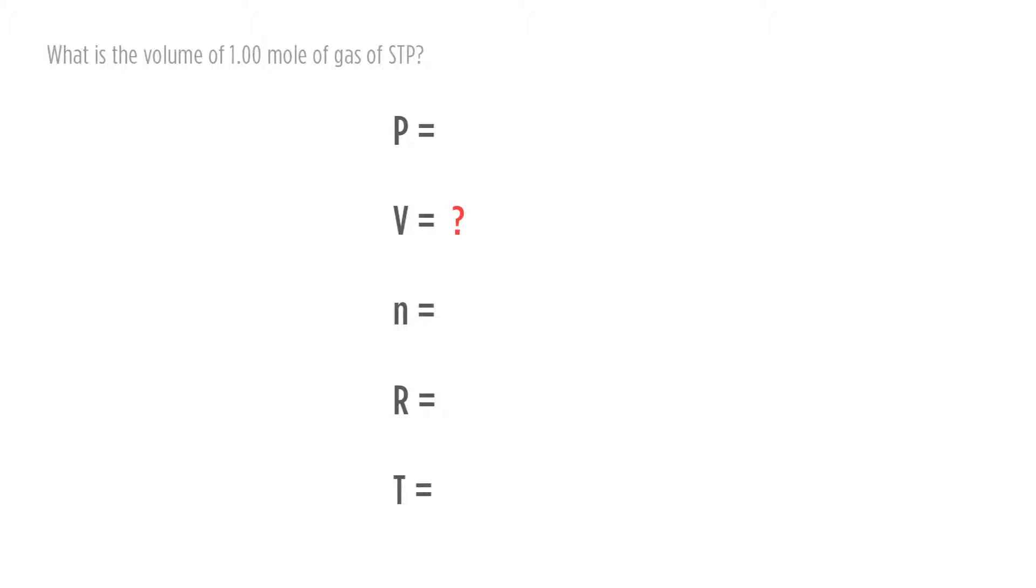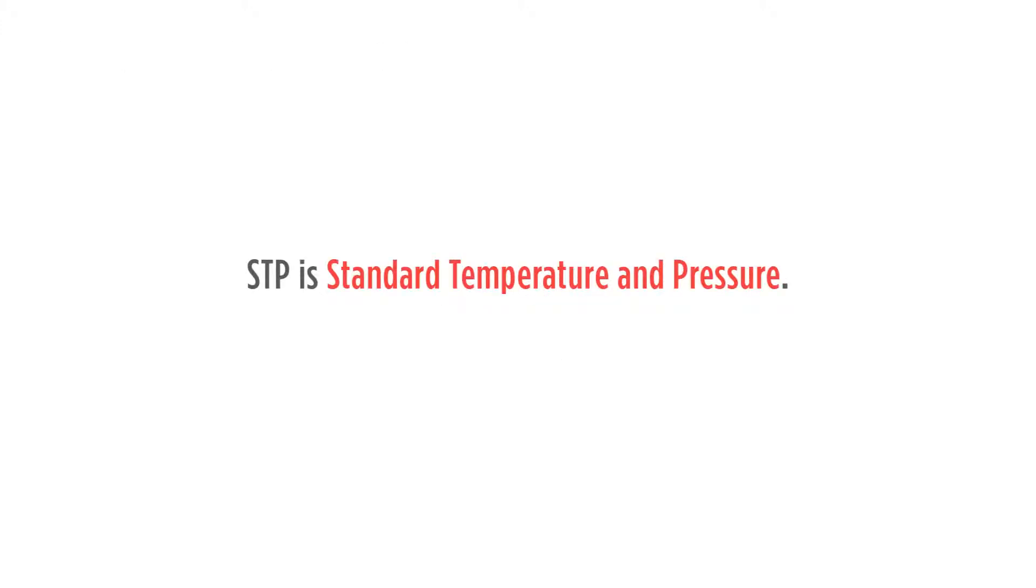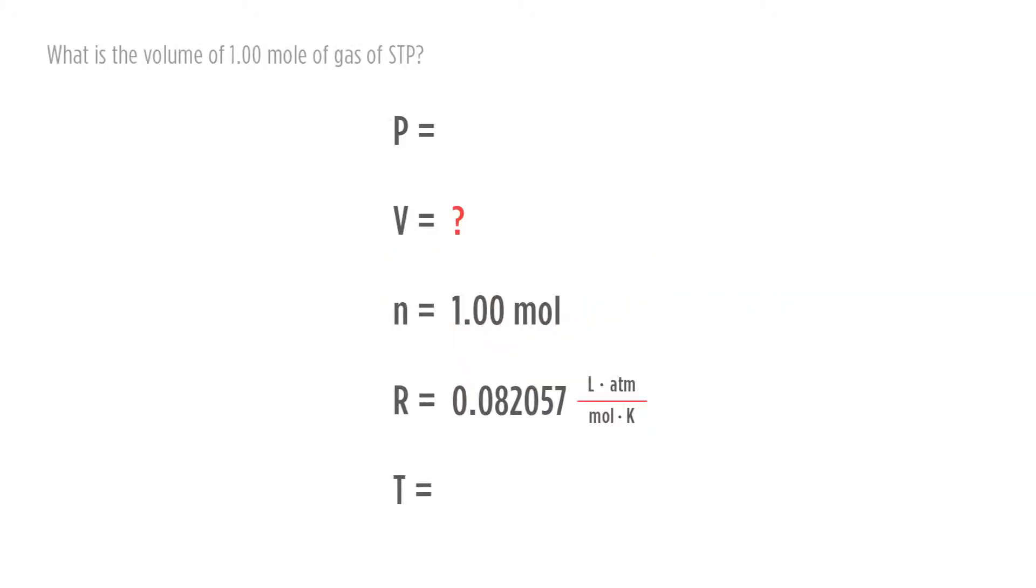We also know that we already know the number of moles, 1.00 moles for n, and of course we know R because R is our constant. It's set at STP. What is STP? STP is standard temperature and pressure. Standard temperature and pressure is 0 degrees Celsius or 273 Kelvin and 1 atmosphere. So therefore, since we know it's at STP, we can put in for pressure 1 atmosphere and for temperature 273 Kelvin.